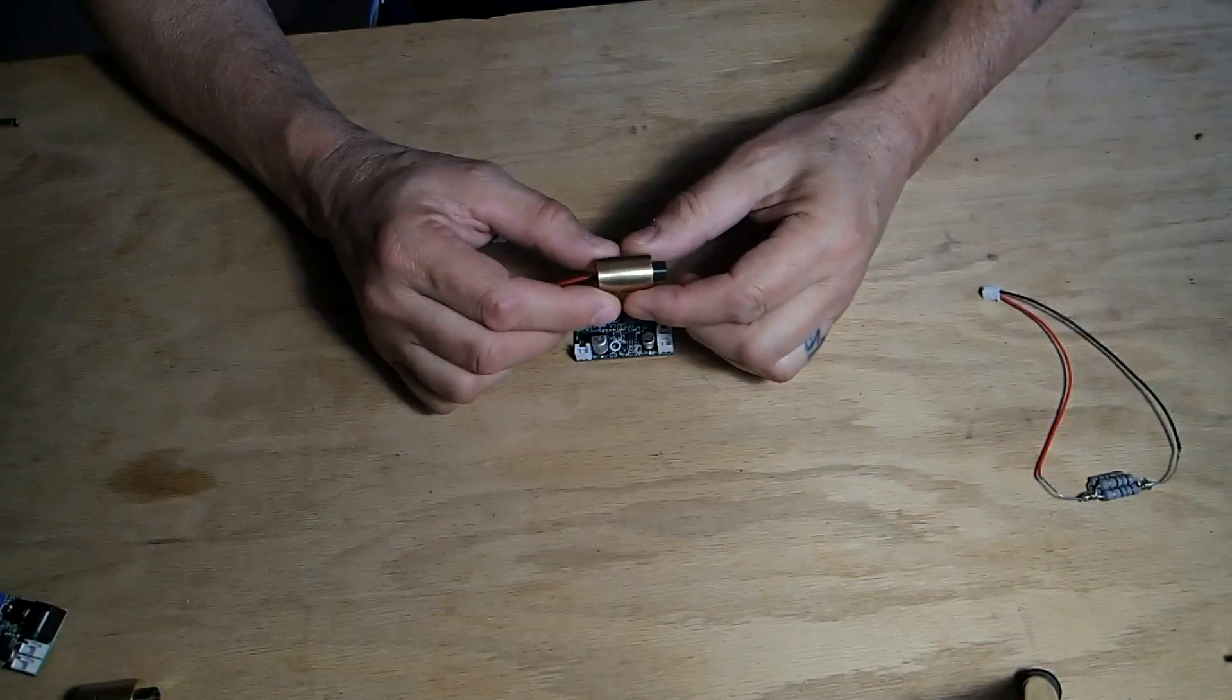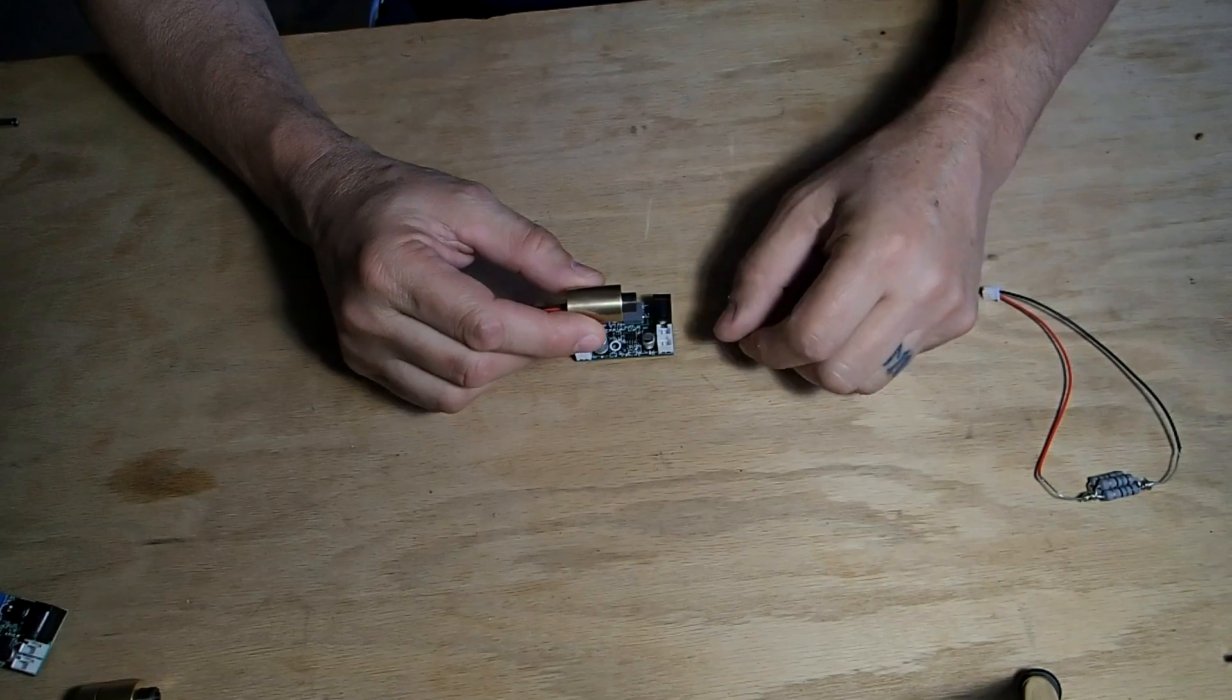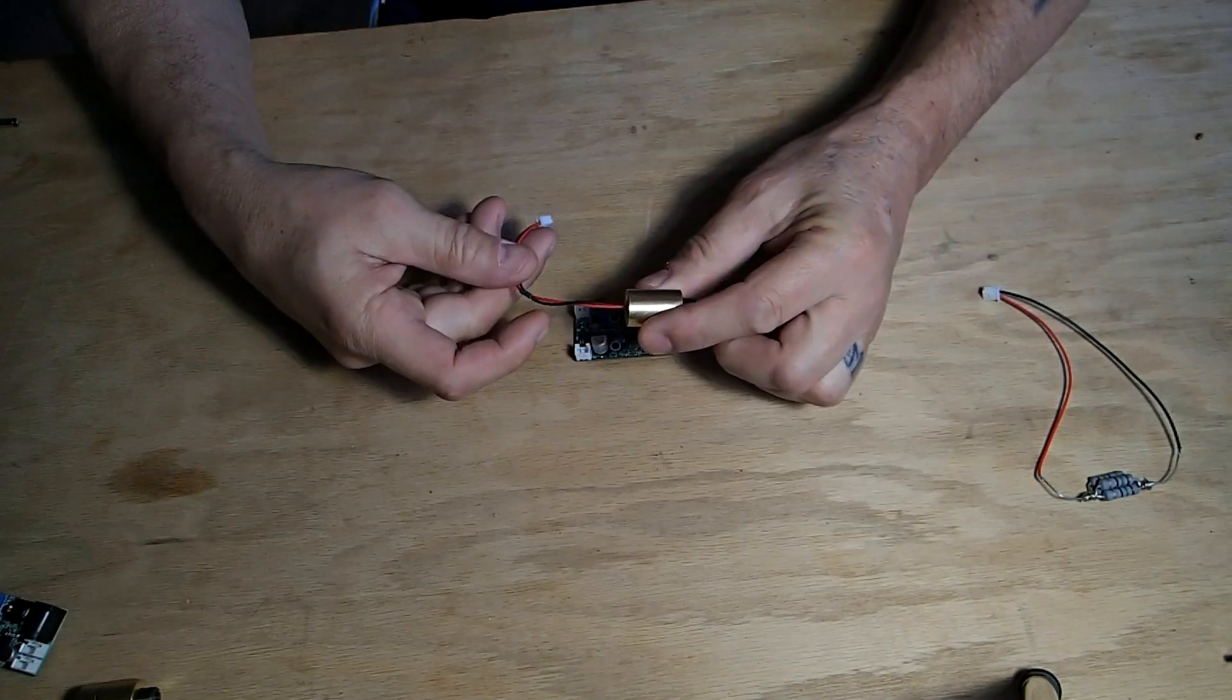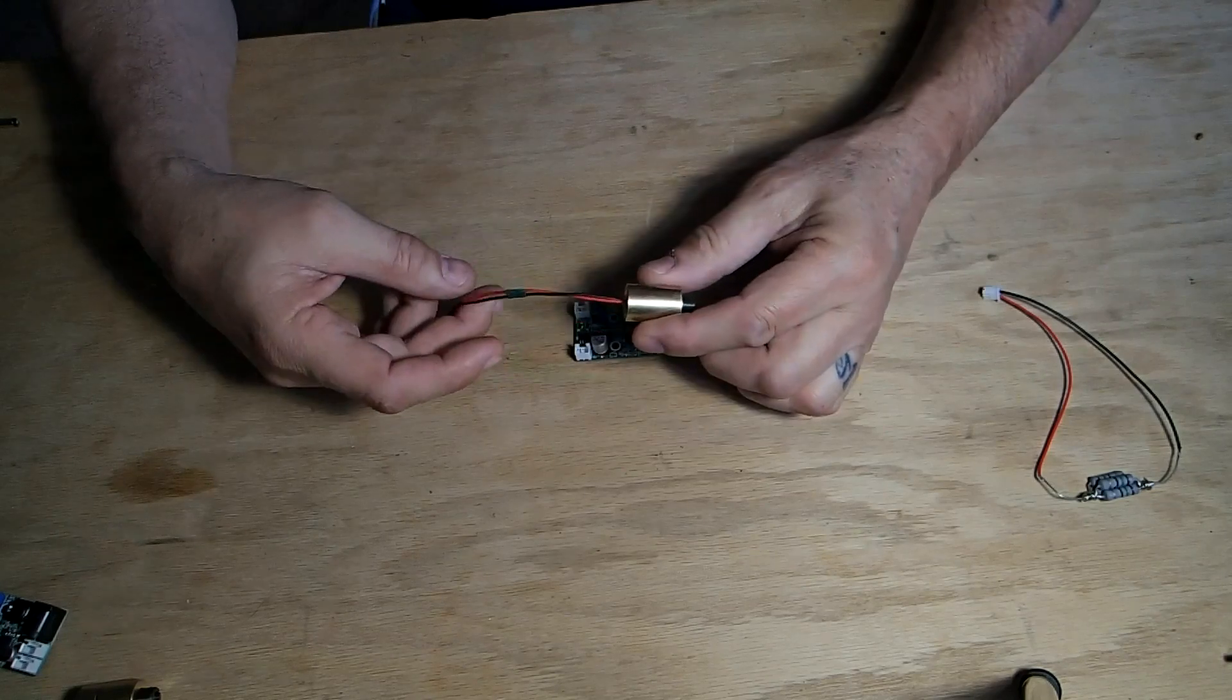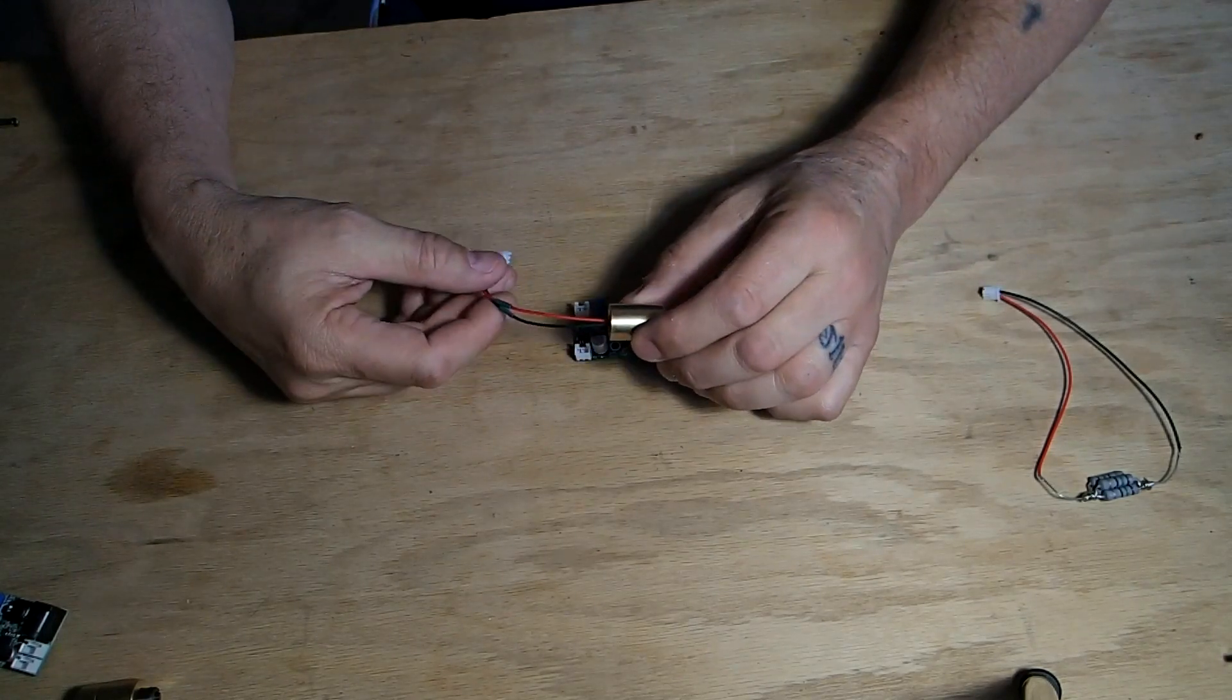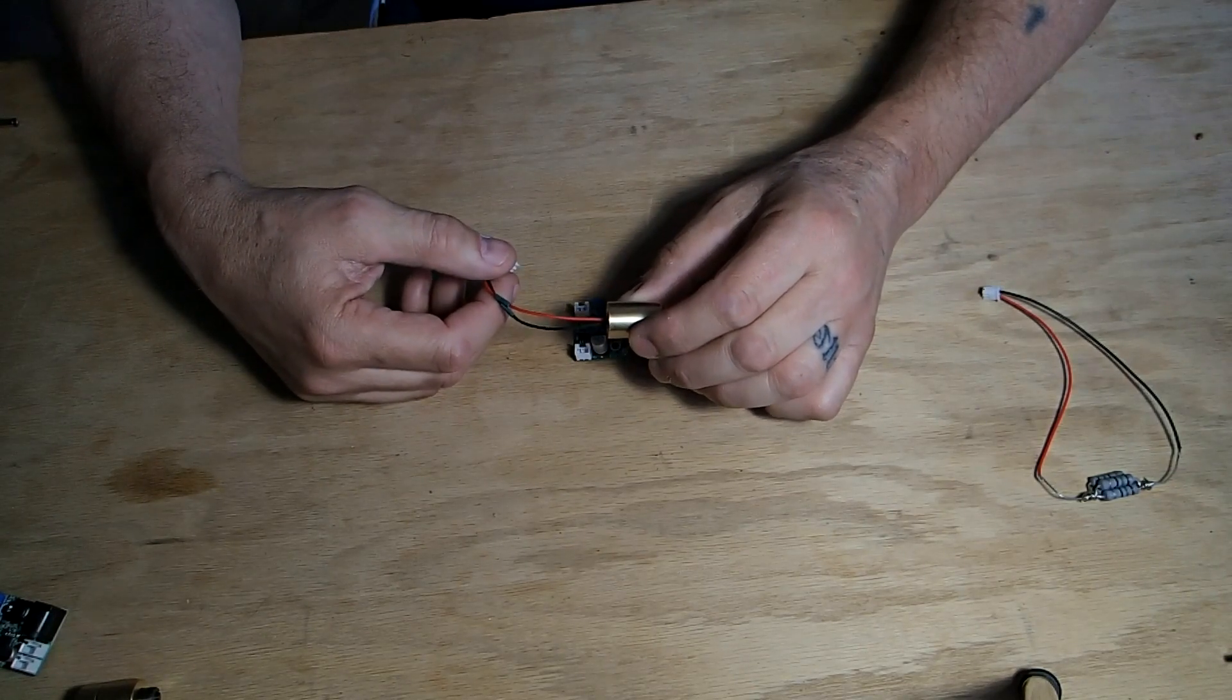This right here is a 1.6 watt blue laser diode. It's capable of burning holes through CDs, lighting matches on fire and basically burning holes in small pieces of paper. This has a current requirement of about 1.2 amps. You don't want to give it more than 1.6 or it will burn it out.